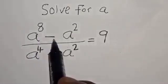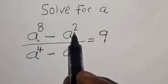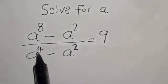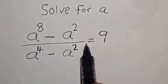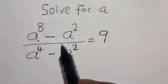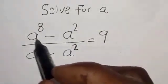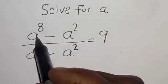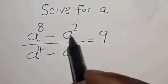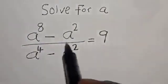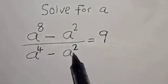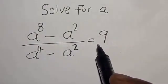We want to find the value of a from the given equation: a raised to power 8 minus a squared, divided by a raised to power 4 minus a squared, is equal to 9.